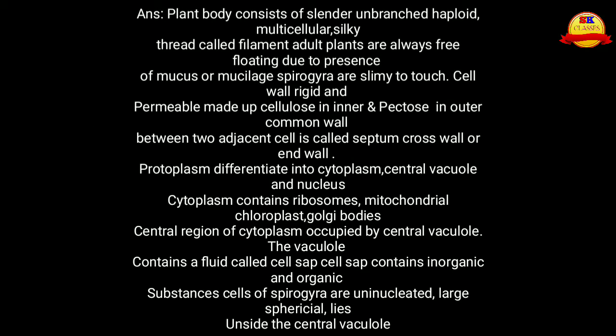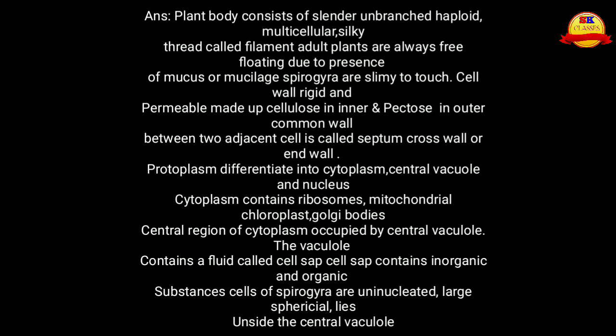The plant body consists of cylindrical, unbranched, haploid, multicellular, silky threads called filaments. Adult plants are always free-floating due to the presence of mucus or mucilage, as Spirogyra are slimy to touch. The cell wall is rigid and permeable, made up of cellulose on the inner layer and pectin on the outer layer. The common wall between two adjacent cells is called the septum, cross wall, or end wall.